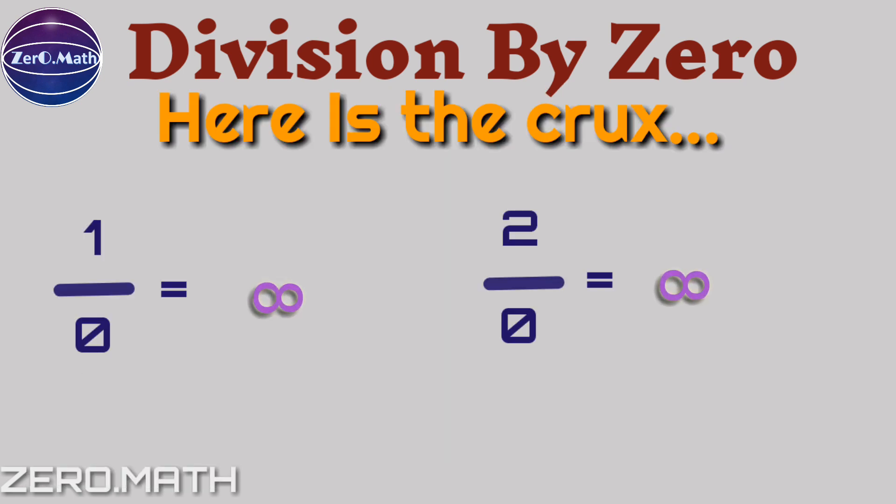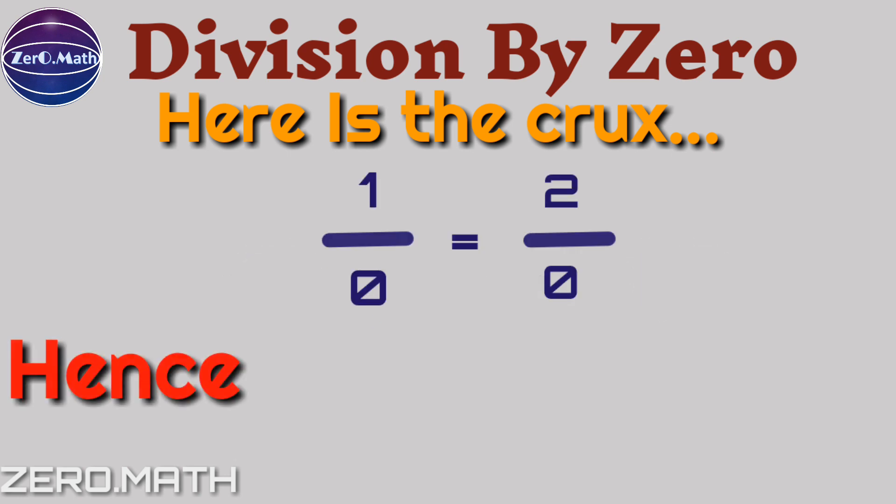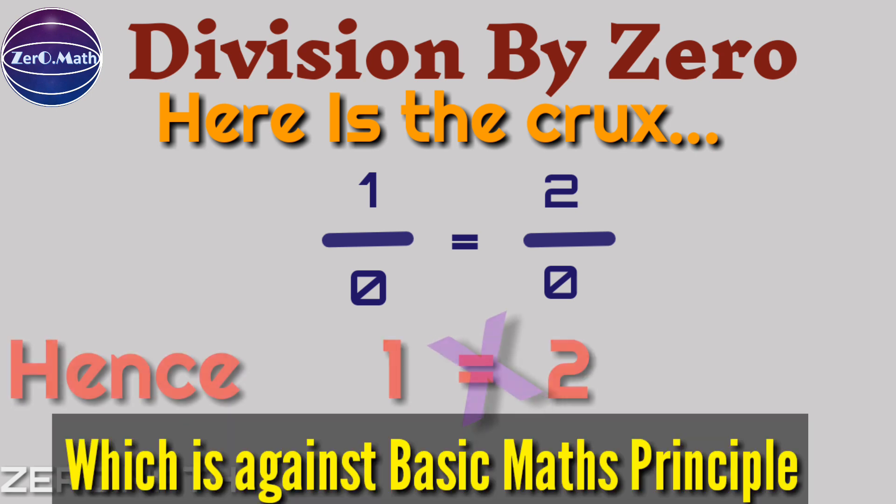Here is the crux: 1 by 0 is equal to infinity, and 2 by 0 is also equal to infinity. Hence, 1 by 0 is equal to 2 by 0. Hence, 1 is equal to 2, which is against basic math principles. 1 cannot be equal to 2.